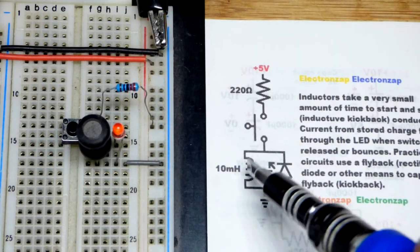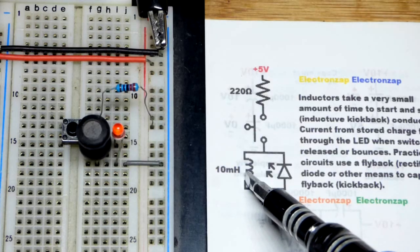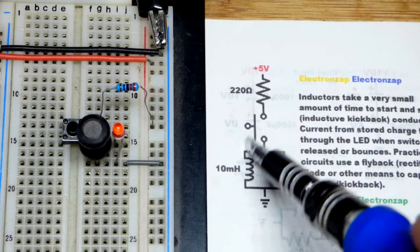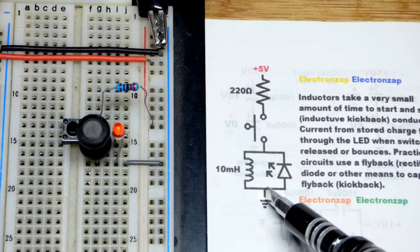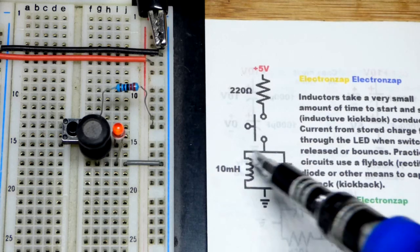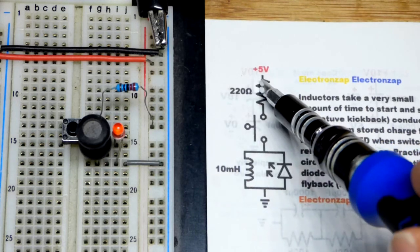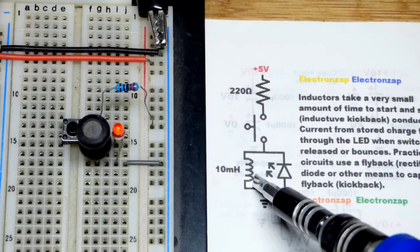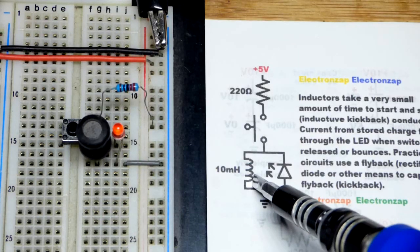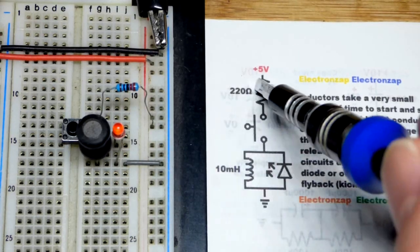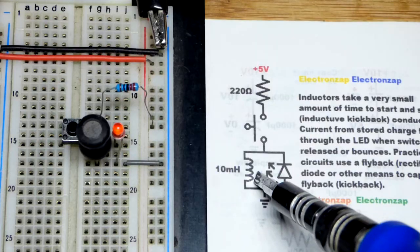It's important to realize the inductor does not conduct instantly. So the voltage is going to build up across it. It's going to start pushing current, and then voltage is going to go down a little bit. At some point, the resistor is going to limit the current, and the inductor has a little bit of resistance as well.